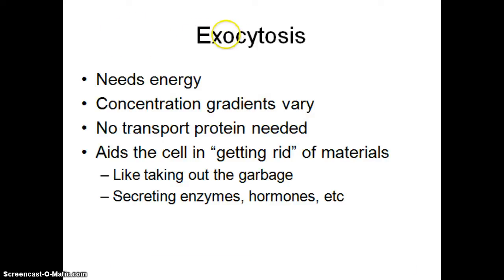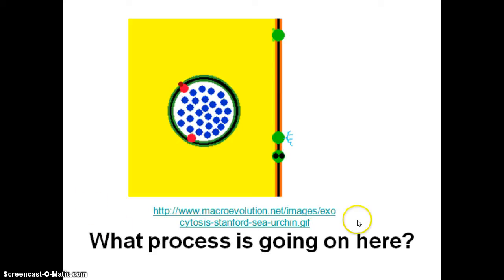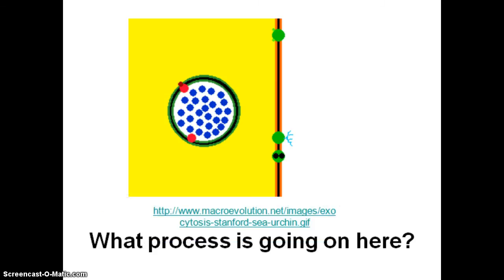Exocytosis — exo means exit, outside — means bringing something outside of the cell. We definitely need energy to do that, concentration gradients can vary, we don't need a transport protein, and it aids the cell in getting rid of things like waste products or enzymes. Our salivary glands make saliva and then release it into our mouths — that's a great example of exocytosis. Cut and paste the animation link into your browser to watch that process, then move on. Hope that helped, and I will see you guys soon.